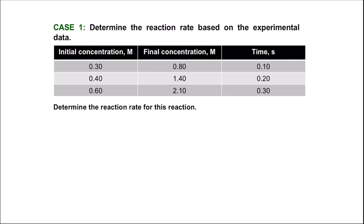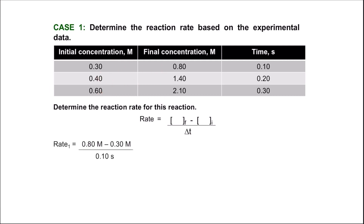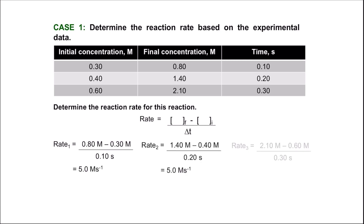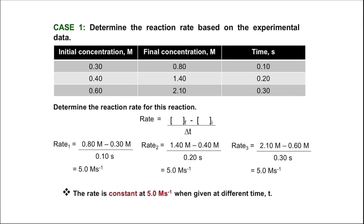Let's talk about how to determine the reaction rate based on two cases. The first case uses experimental data. The rate is calculated as concentration final minus concentration initial over the period of time. You calculate based on each data point available. From three different data points, we calculate rate one, rate two, and rate three, and we can see that the rate is constant at 5.0 molar per second when the reaction is measured at different times.